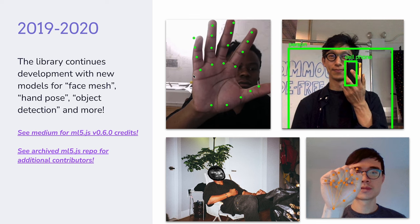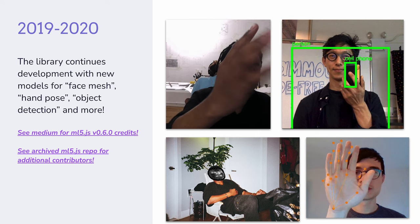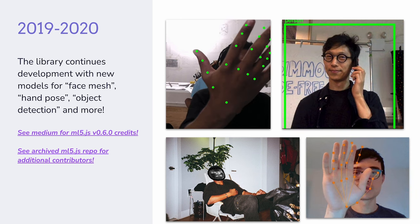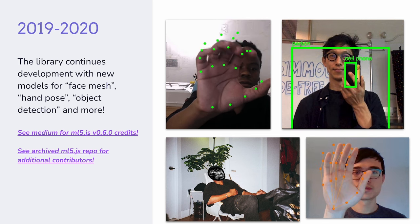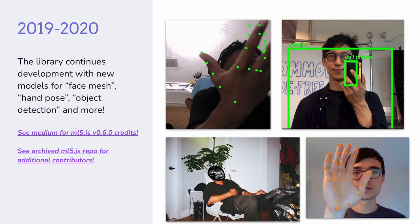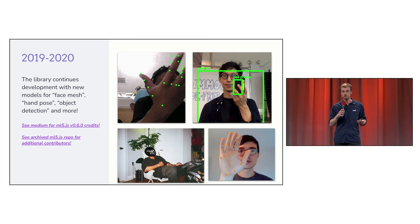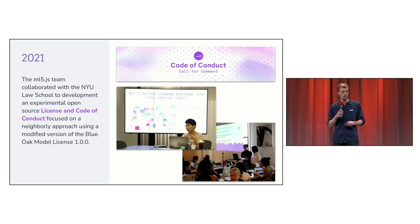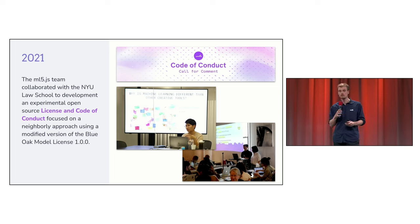In 2019 and 2020, with the release of MediaPipe models supporting face key point detection, hand pose, and object detection, we worked to explore creative use cases of these models and make them available to our students and artists. In 2021, we worked with colleagues at NYU Law School to develop an experimental open source license and code of conduct focused on the ethical use of AI, building a neighborly approach using a modified version of the Blue Oak model license.